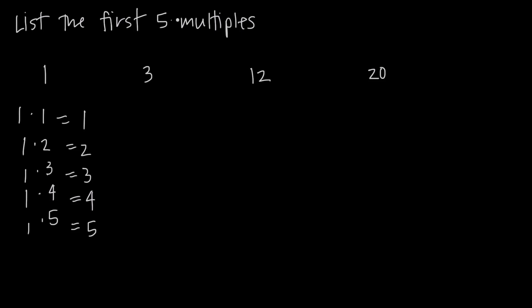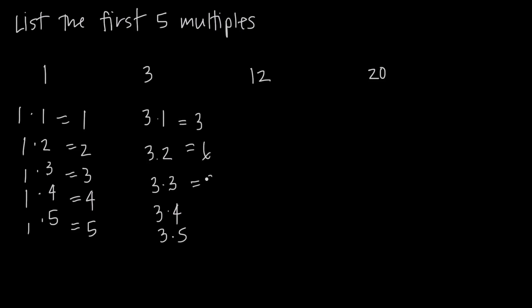So if I want to find the first 5 multiples of 3, I just want to say 3 times 1, 3 times 2, 3 times 3, 3 times 4, and 3 times 5. And the results I get are 3, 6, 9, 12, and 15. So 3, 6, 9, 12, and 15 are the first 5 multiples of 3.